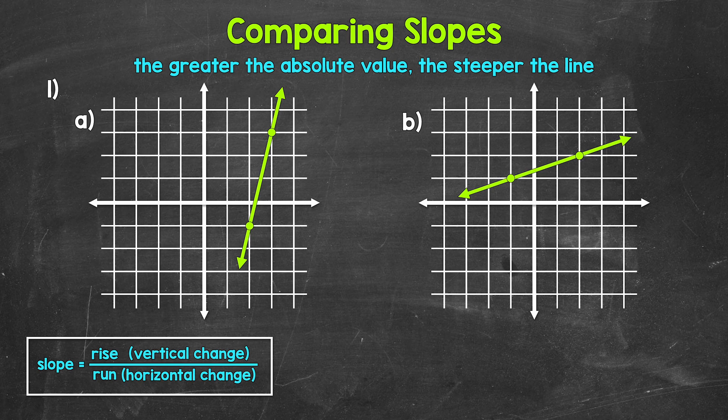Let's jump into number one, where we have two lines: line A and line B. We can see that line A is steeper than line B. But let's find the slope of each in order to put a number on their steepness and measure it. Once we have the slopes, we can compare and think about what they mean as far as steepness. Remember, slope equals rise over run — the vertical change over the horizontal change.